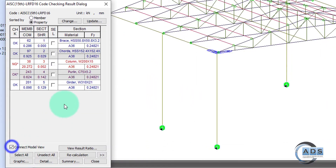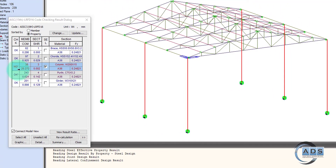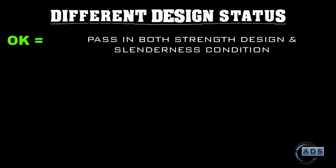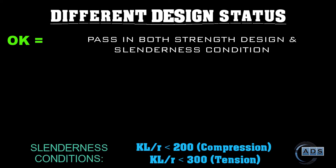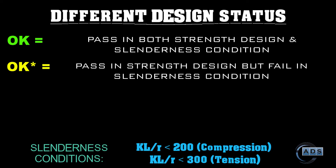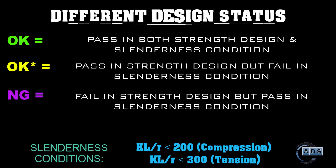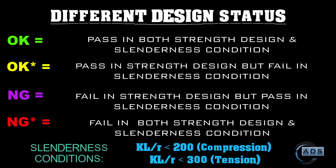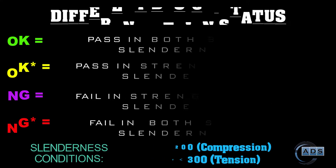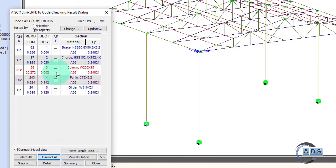All columns are not good (NG). The different notations are: OK means the strength design check is satisfied and slenderness is also OK; OK* means strength is OK but slenderness is violated; NG means the strength design condition is not satisfied but slenderness is OK; NG* means both strength and slenderness limit are violated.